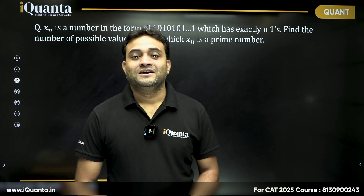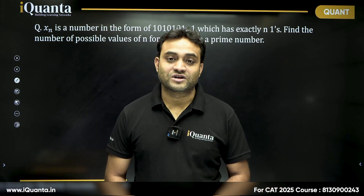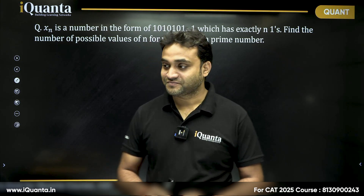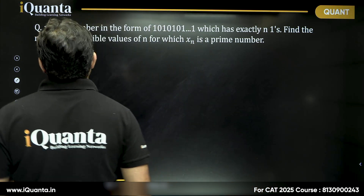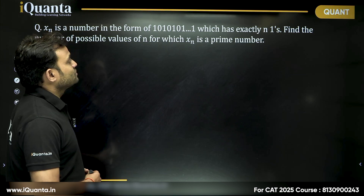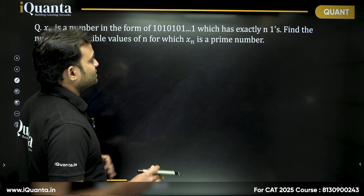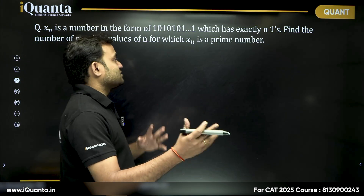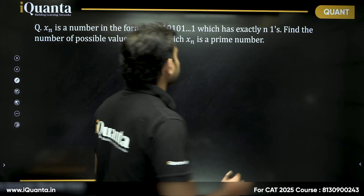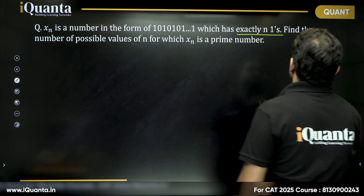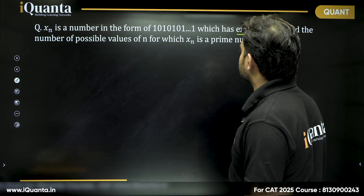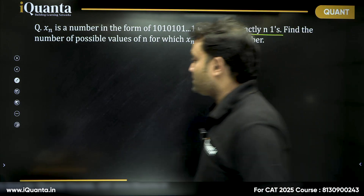Hello everyone, today we are going to discuss a very interesting problem based on number system. This question says x_n is a number in the form of 1 0 1 0 1 0 1 0 1 and so on, ending with 1, which has exactly n ones. Find the number of possible values of n for which x_n is a prime number.